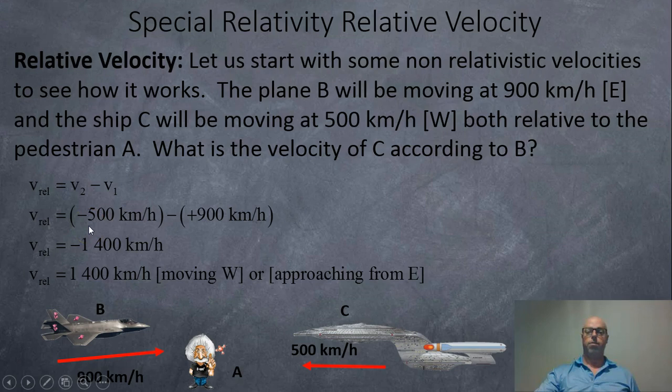To find that out, we're going to take velocity 2, which is negative 500, because 500 west is negative 500 east, subtract the 900 km per hour of the observer in B. Observer B is going to say, C is approaching me at 1,400 km per hour, or minus 1,400. So it's 1,400 km per hour west, or coming from the east.